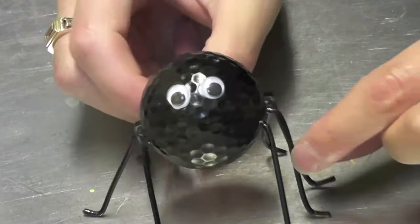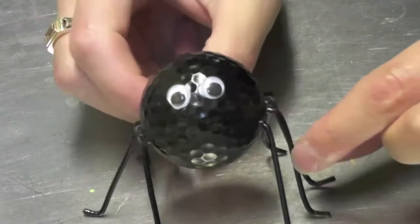You could always put an eye hook in here, paint that black also, and hang them. You could have a bunch of them hanging around. That would be cute, too.